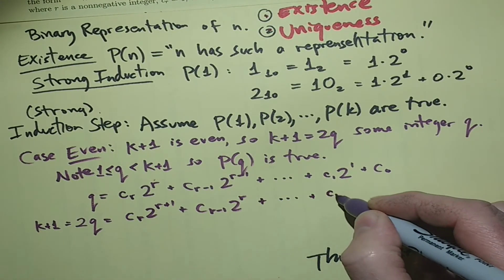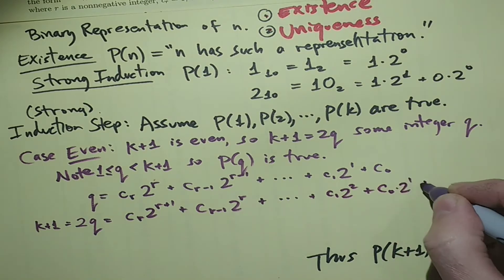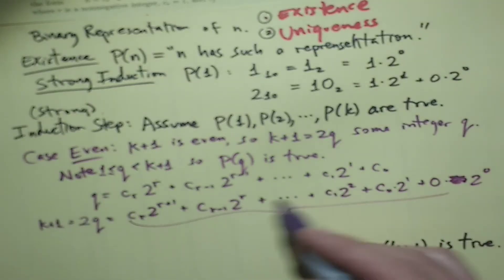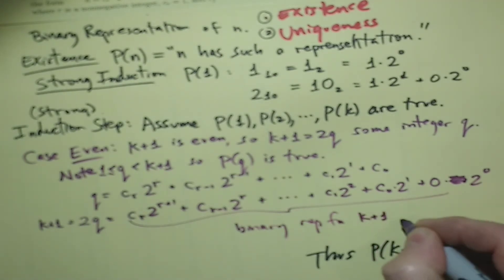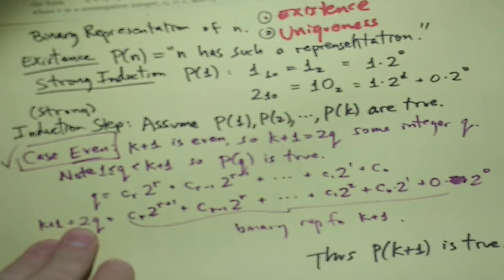And c1, 2 squared, plus c0 times 2 to the 1 plus 0 times 2 to the 0. Well, all of these, this is a binary representation for k+1. So in the case where k+1 is even, we're set and we should look at the next case.